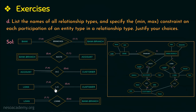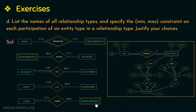The next relationship type is LC, relating loan and customer. All loans are taken by one or more customers, so total participation represented as 1, and one loan can be availed by at most n customers considering joint accounts. Not all customers take loans, so partial participation, and one customer can take a maximum of any number of loans, giving (0,n).